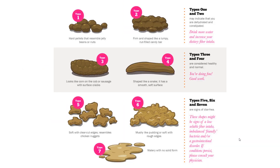That brings us to the end product of our digestive system — feces. Feces come in all shapes and sizes, and we can tell a lot about diet and body health based on the feces. Take a look at this graphic and review what stools should look like in a healthy environment and what the causes may be of the less healthy stools. Note that types three and four are the preferred shape and consistency.